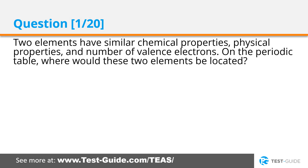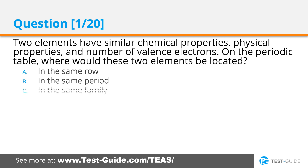Question 1. Two elements have similar chemical properties, physical properties, and number of valence electrons. On the periodic table, where would these two elements be located? In the same row? In the same period? In the same family? In the same orbital?